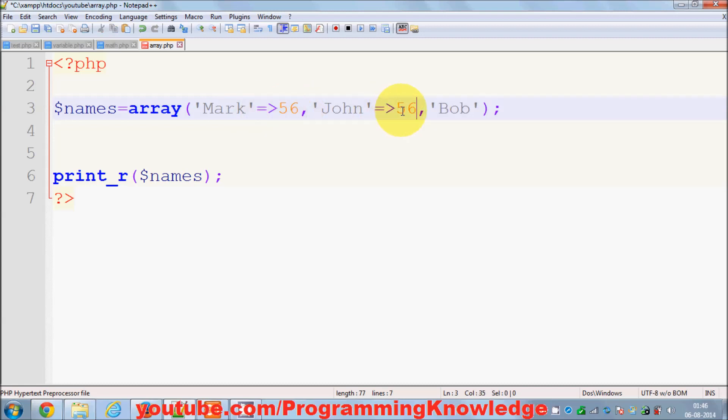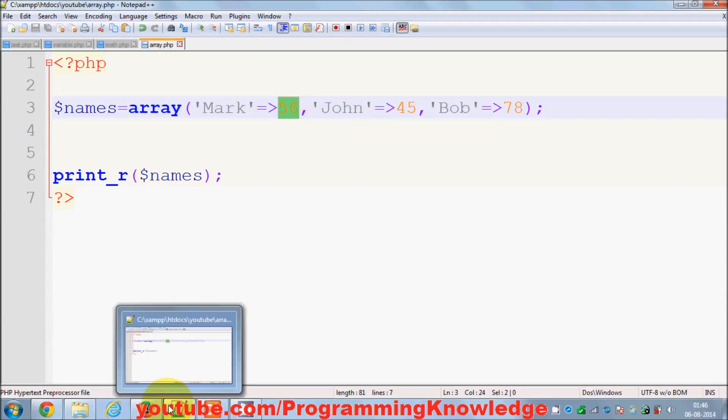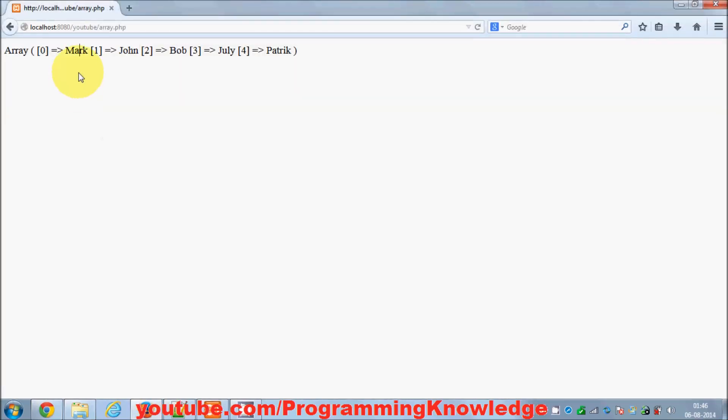the John key with some other weight, and to the Bob key some other weight. So now this name 'Mark' is no longer a value, it has become the key, and this weight is now your value. So now in the